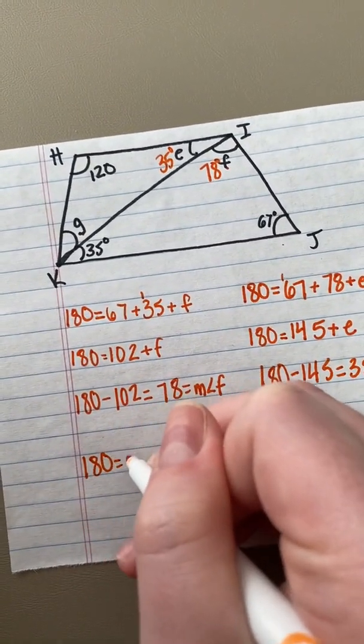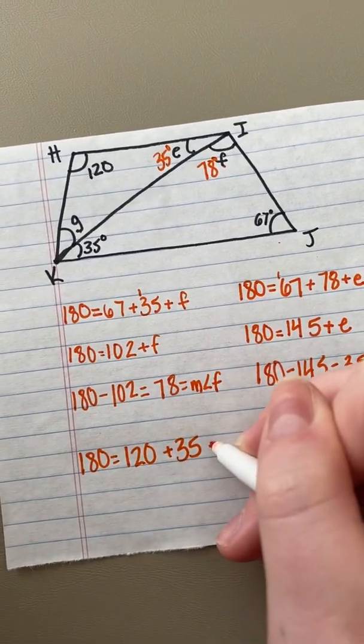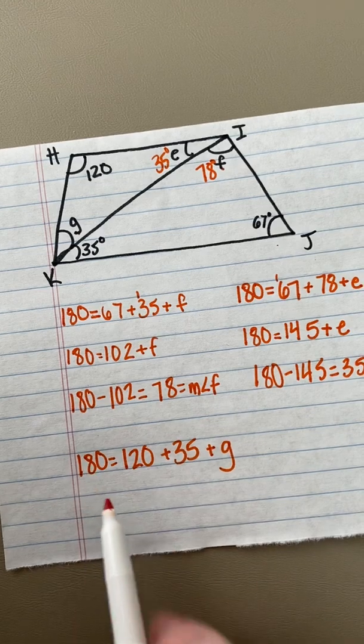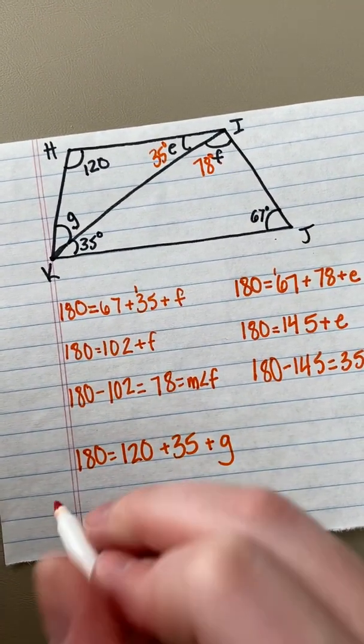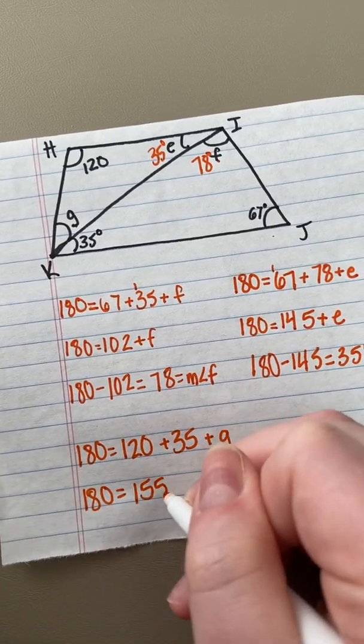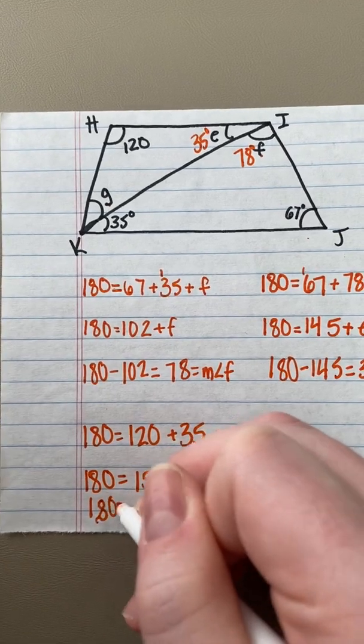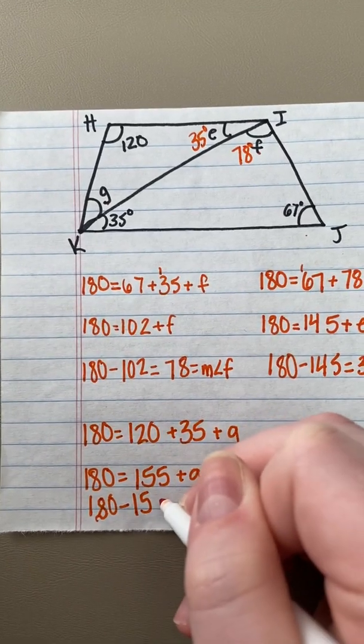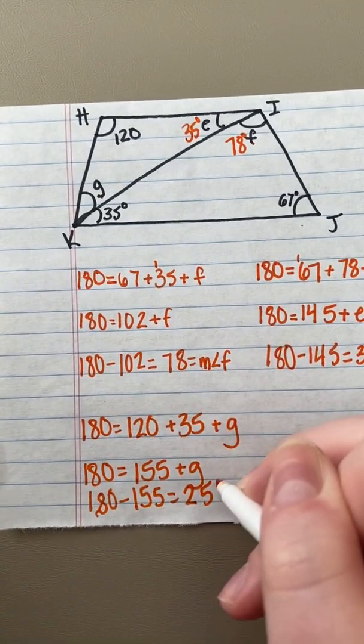So again, a triangle equals 180 degrees. And the three angles I have in this triangle are equal to 120, 35, and the unknown angle. When I add what I know, I get 155 degrees. And when I subtract 180 minus 155, that gives me 25 degrees.